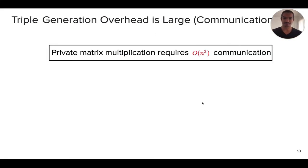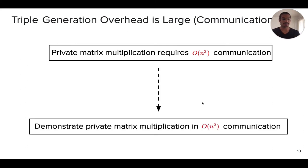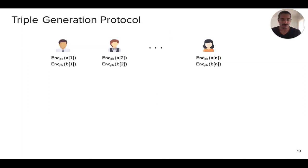Now I'm going to pass the button to Samir. Let me start by giving the main result of this work. Prior work, in particular in the triple generation phase, has a large amount of communication overhead. If you want to do matrix triple generation of size n by n, you require order n cube communication. In this work, we demonstrate how to do this triple generation for matrices in order n square communication. So let's take a look at how we do this. The triple generation protocol, I'm going to present how SPDZ does it, which is the state-of-the-art protocol we build on, and then how we change it.